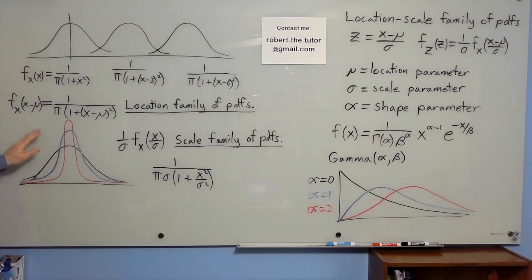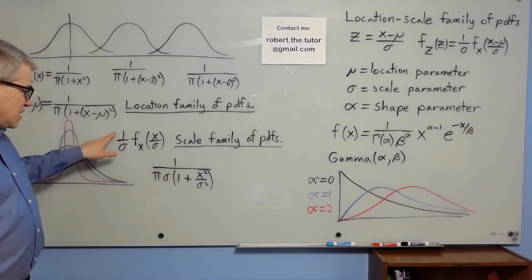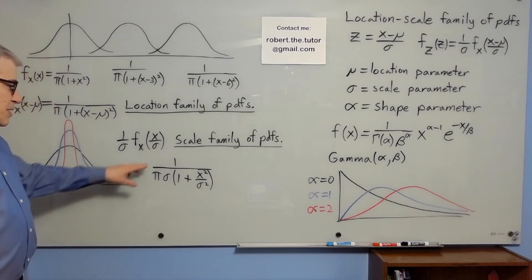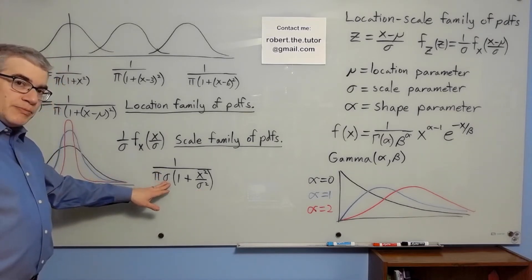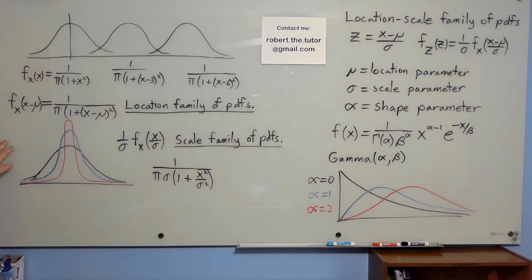Likewise, you can make a scale family of PDFs, dividing by sigma out front and dividing the x by sigma inside the function. This makes sure that the area remains 1 when you change the horizontal scale. So as sigma increases, these curves are getting shorter and wider. So that is a scale family of PDFs.